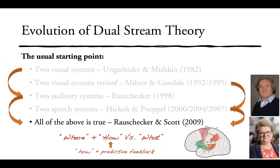A few years later, Rauschecker and Scott proposed a kind of synthesis — that there is not only a how stream but also a where stream in auditory systems. The what stream has stayed constant throughout all of this. They further proposed that the how stream is involved in predictive feedback, which is consistent with how-stream research in visual motor control.